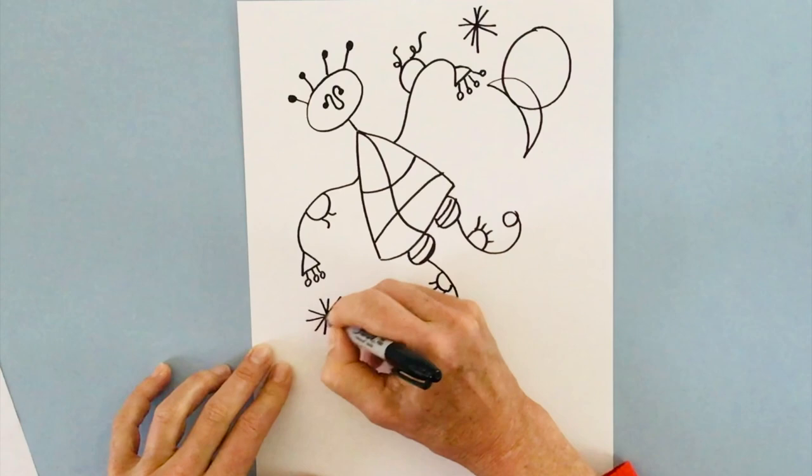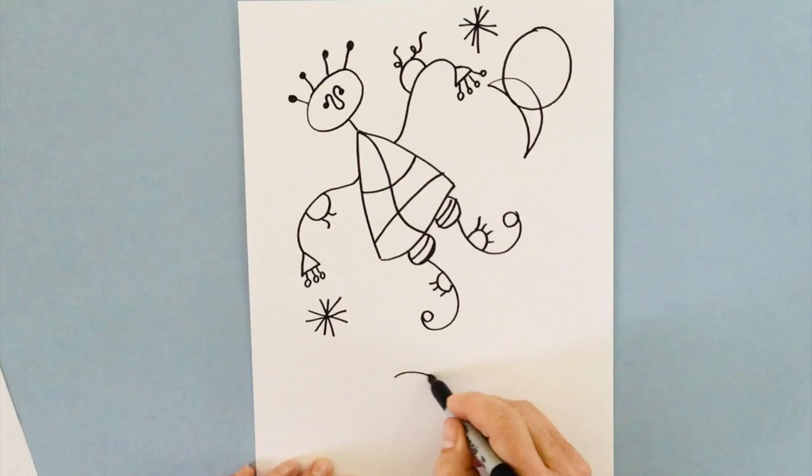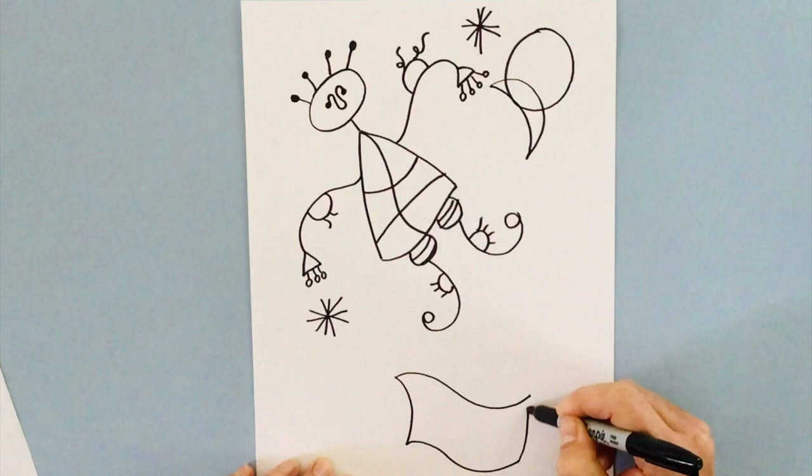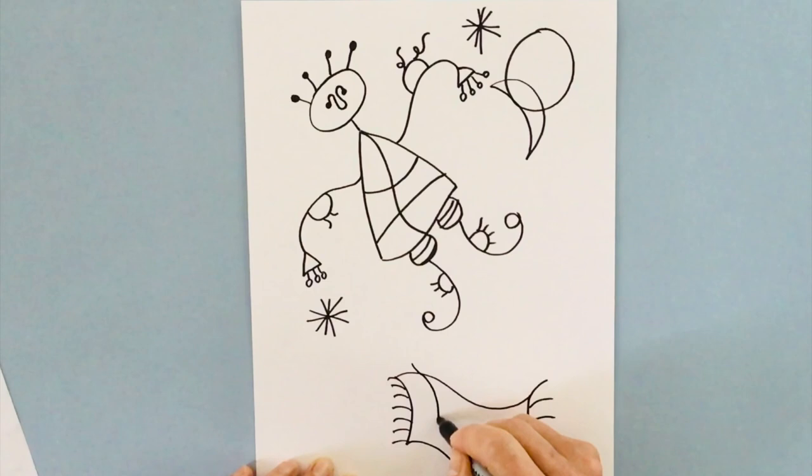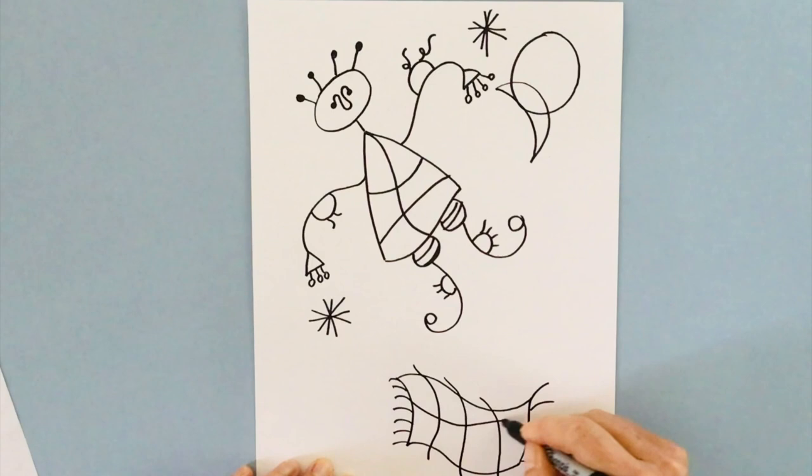And then I'm going to add maybe a flying rug or a flying carpet. And so think about fun things, whimsical. I mean, this really doesn't make any sense. And that's why it's really fun. And then I will be coloring them in different colors a little bit later. Maybe I'm going to add a little bit more.